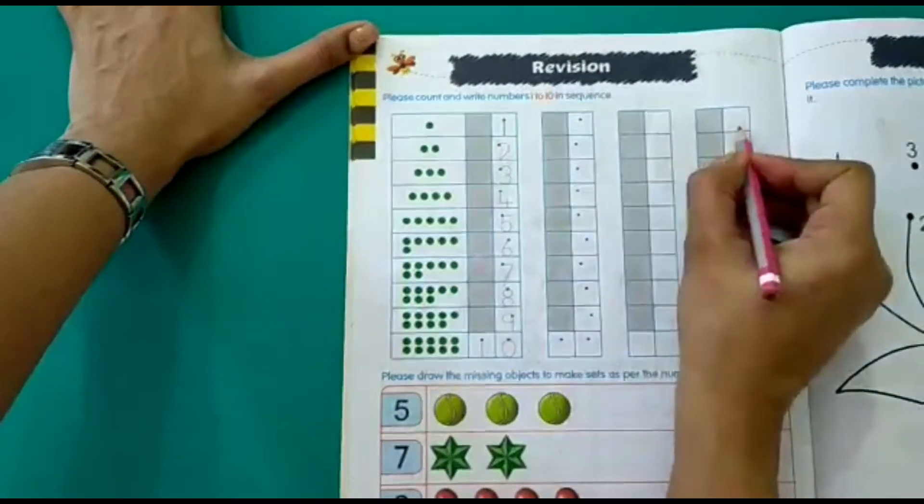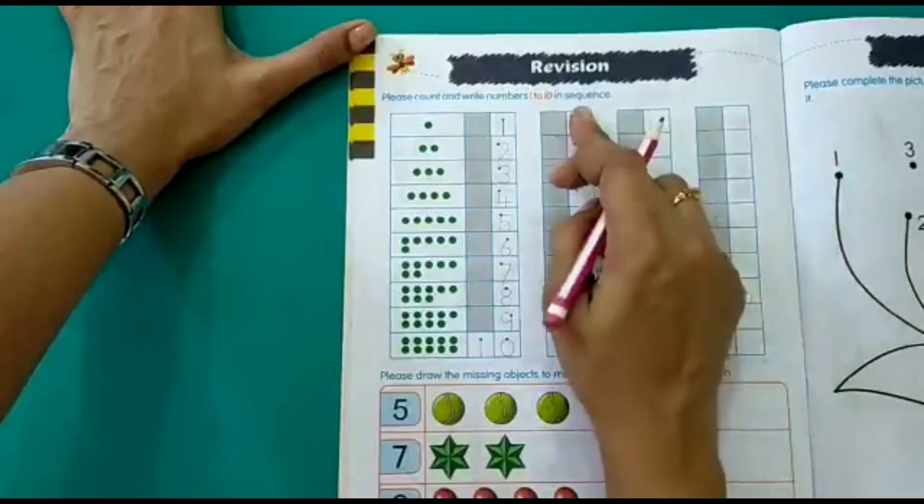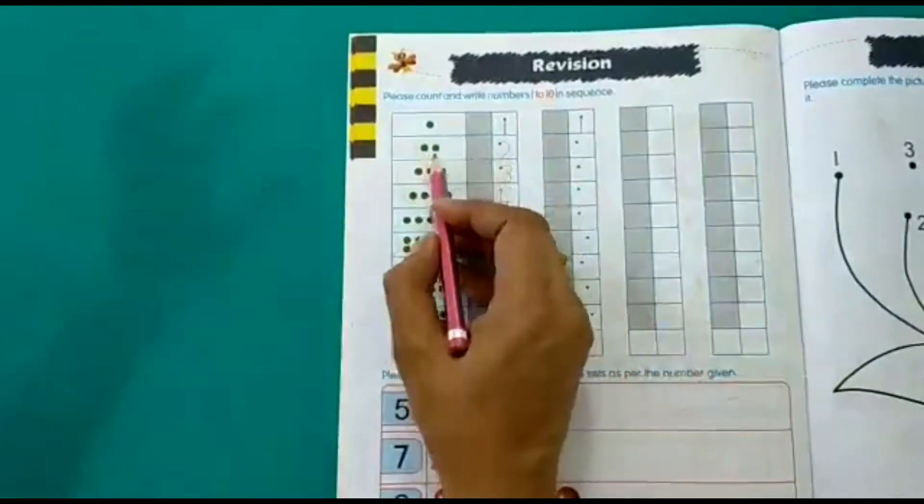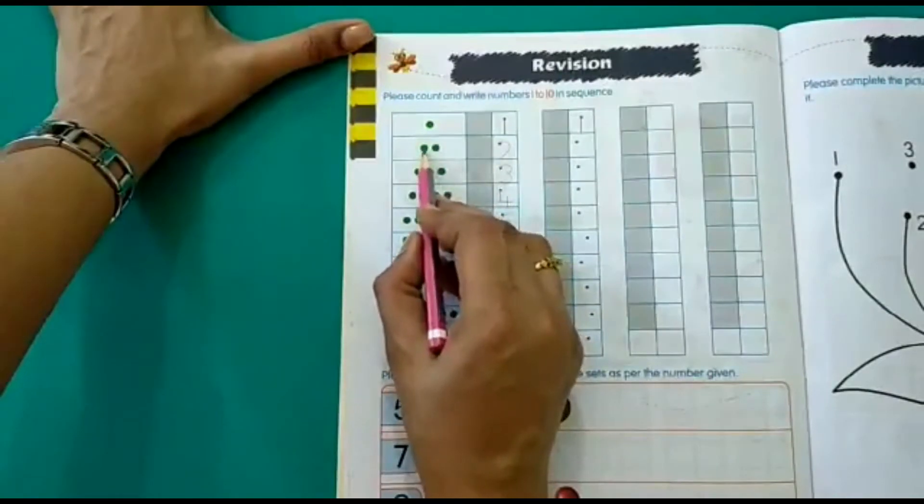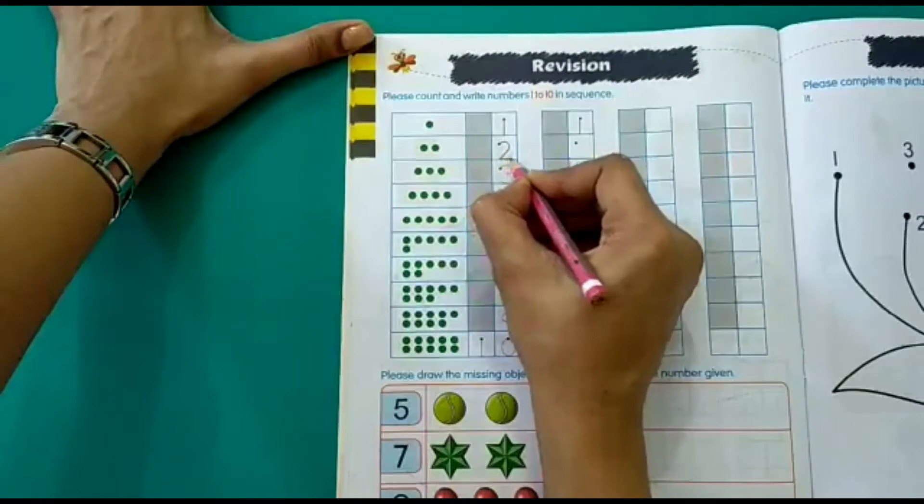Same ways in the boxes next to that you have to write number 1 and practice it. So, the second box has 2 beads. 1, 2. So you have to write number 2 here.